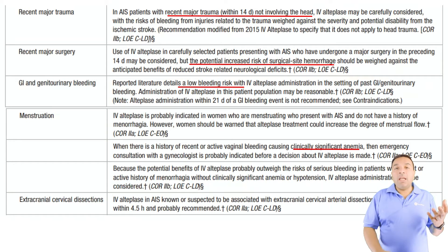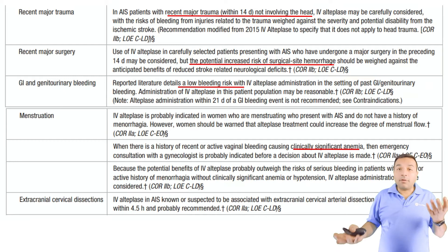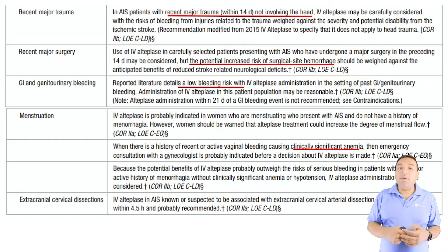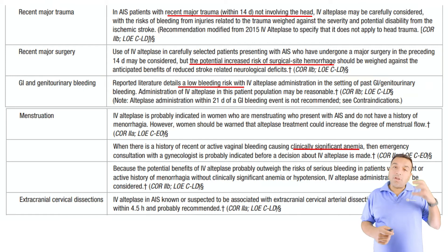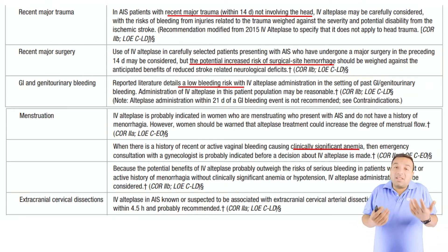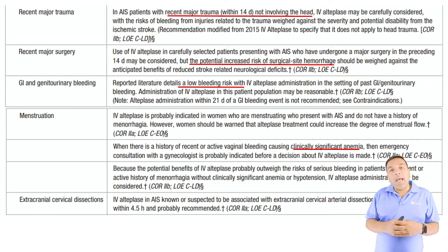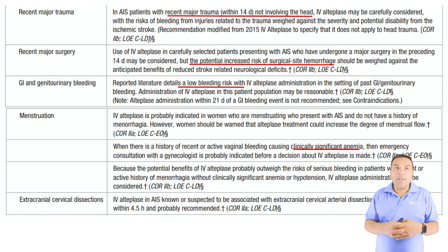There is a risk of bleeding, but if the patient would have severe disability — for example, aphasia for the rest of their life — you have to weigh risk versus benefit. If it's a very mild stroke, don't give it. These are the judgment calls that stroke physicians have to make.